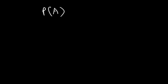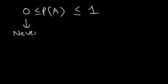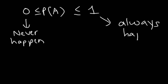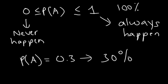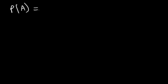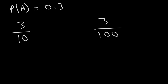The probability of an event occurring is always between zero and one. If the probability is zero, this means the event cannot happen — it will never happen. If the probability is equal to one, that means the event will always happen — it has a 100% chance of occurring. If the probability is 0.3, that's 30%, meaning out of 10 possible tries we'd get approximately 3 favorable outcomes, and out of 100 tries we'd get 30 favorable outcomes.